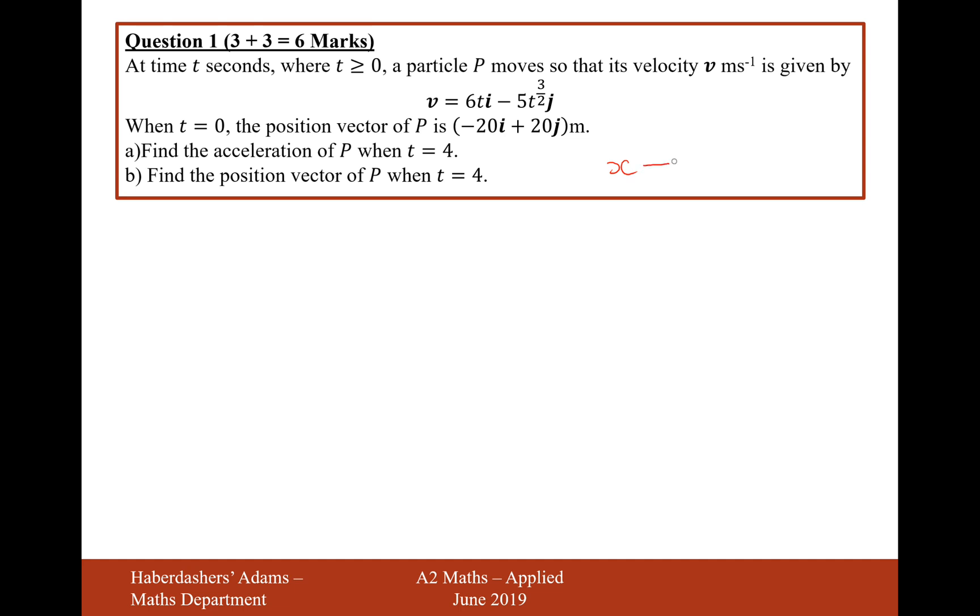So here we're going to use the differential of displacement is velocity, and the differential of velocity is acceleration. We're going to use this last part here. The differential of velocity is acceleration. So what I'm going to do here is differentiate velocity, and I'm going to differentiate each of these independent functions. So it's going to be 6i, and then minus times the power to the front, so 15 over 2t to the power of a half j.